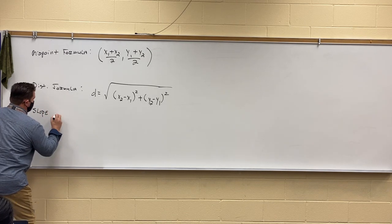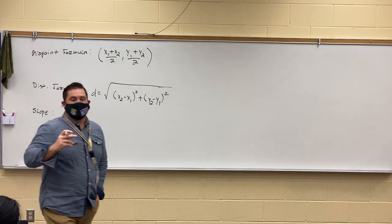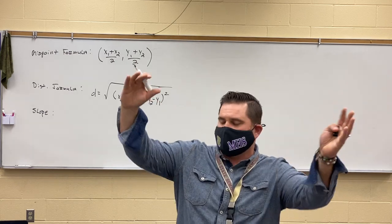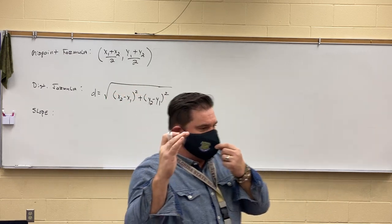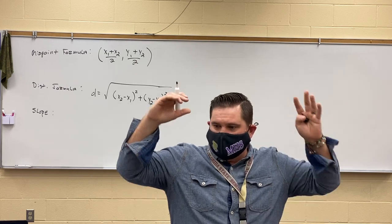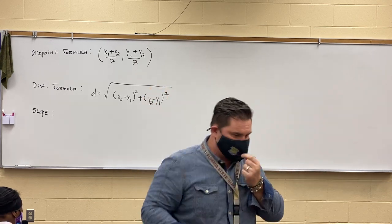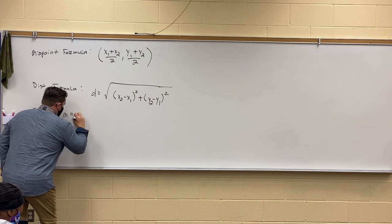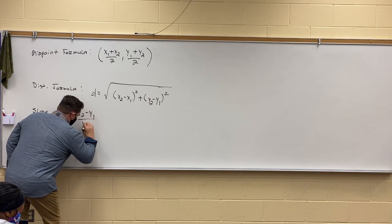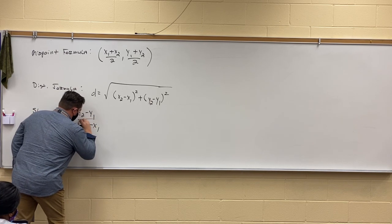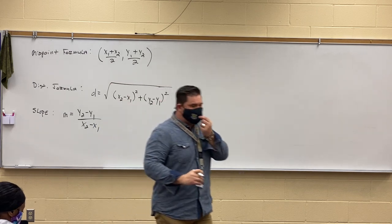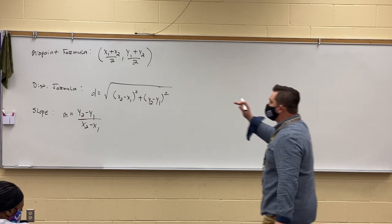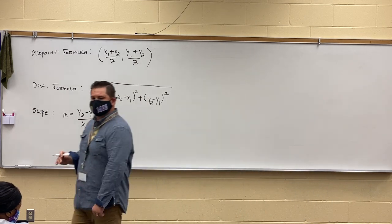We started talking about slope. Who can tell me how I can find the slope between two points in a coordinate plane? What if I only give you the coordinate points and don't give you the graph? Y2 minus Y1 over X2 minus X1. That is correct. And yesterday Hunter gave us a perfect definition: slope is the change in Y over the change in X.